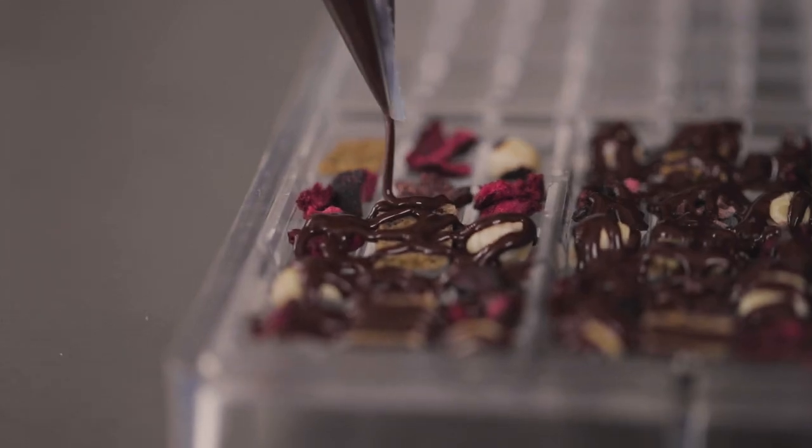Now we don't want to tap the mold too much at this point to let the chocolate settle because we don't want it going underneath the inclusion. That's not the point. The point is to just hold it in place so that when we do pour the chocolate in, it doesn't disrupt those inclusions.